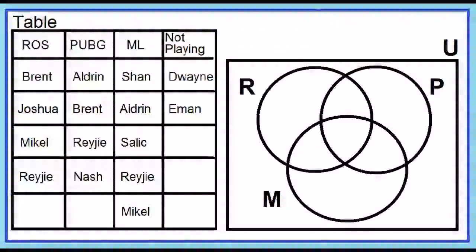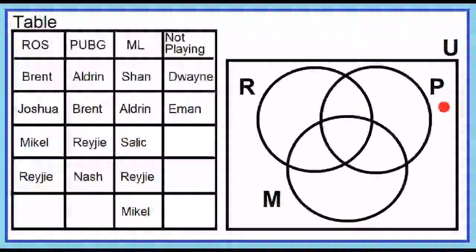Let's use a Venn diagram to answer the questions. Let R be the set of ROS players, let P be the set of PUBG players, let M be the set of ML players. Let's start with the intersection of the three sets. What element is common to sets R, P, and M?